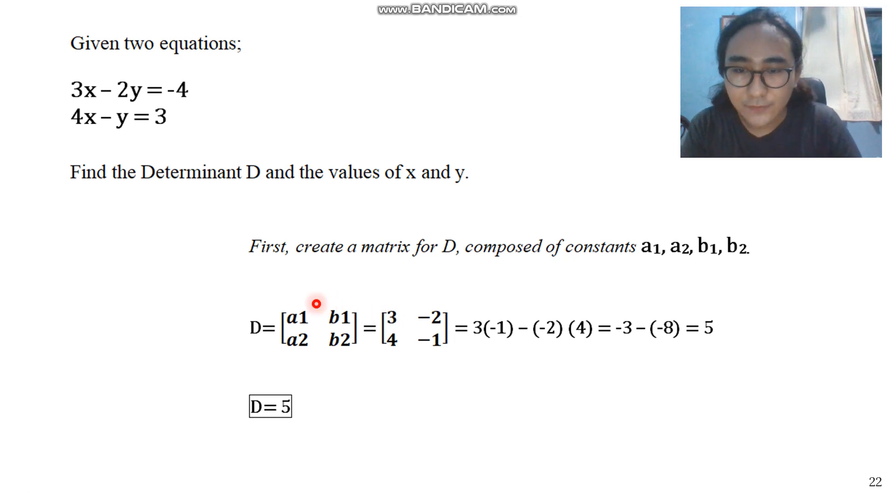So, if we substitute those values to our matrix, we will have this matrix again. This is a 2 by 2 matrix. We can solve this using the simple formula. We multiply 3 by negative 1 minus the product of negative 2 and 4. That will give us D is equals to 5.